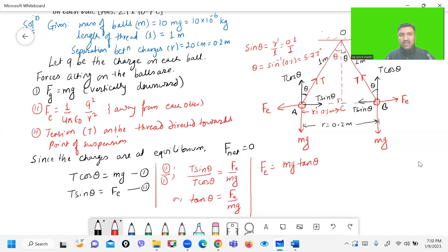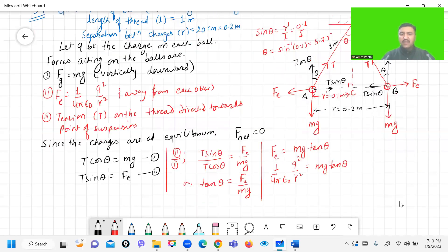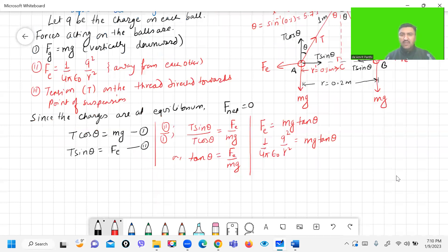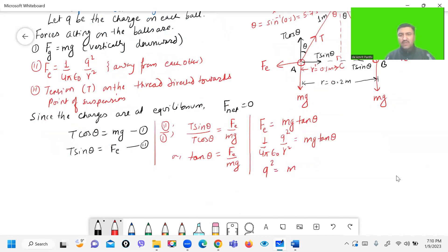And electrostatic force is 1 upon 4 pi epsilon naught Q square by R square, which is equal to mg tan theta. So the value of Q square is Q square equals mg R square tan theta into 4 pi epsilon naught.